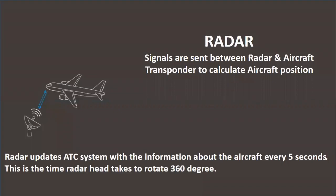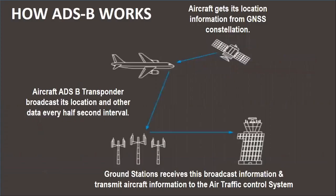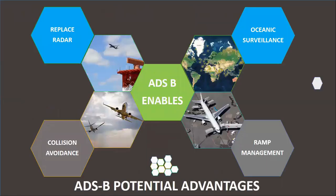Radar signals are sent between radar and aircraft transponder to calculate aircraft position. Radar updates the air traffic control system with information about the aircraft every 5 seconds. An aircraft with ADS-B capability determines its position using GPS. The Mode S transponder then broadcasts that position at rapid intervals, along with identity, altitude and velocity information. Dedicated ADS-B ground stations receive the broadcasts and relay the information to air traffic control for precise tracking of the aircraft for radar control.